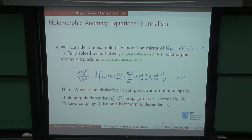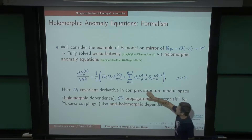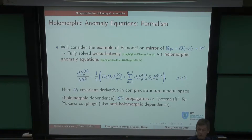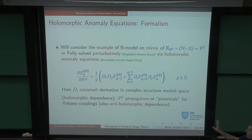Moduli space has a boundary where a genus-G surface degenerates — a genus-2 surface can degenerate to a genus-1 connected via pinching, or to two disconnected genus-1 surfaces. This translates schematically to the holomorphic anomaly equations: there's a covariant derivative term and a sum over h from 1 to G-1 of disconnected contributions. All the right-hand-side involves genus less than G, making this recursive.